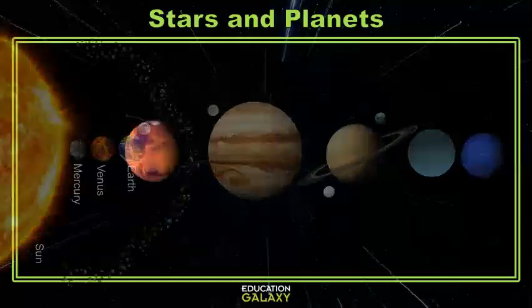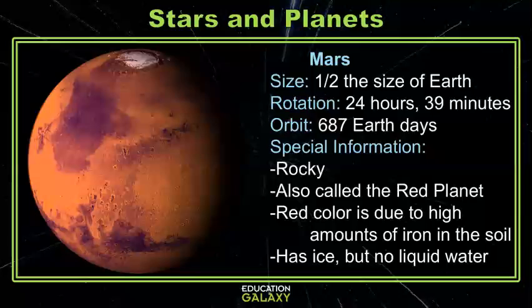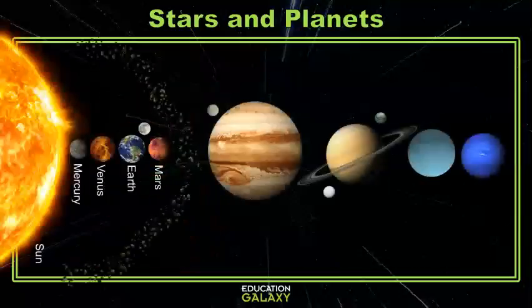The last rocky planet is Mars. It's about half the size of Earth and it's also called the red planet. It's another rocky planet. In between the first four and the last four planets is an asteroid belt.